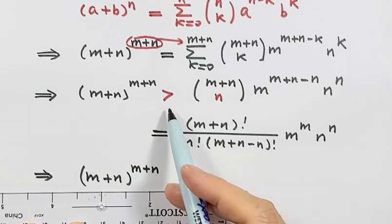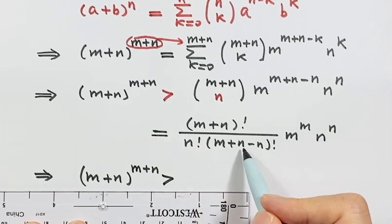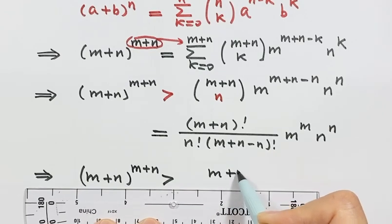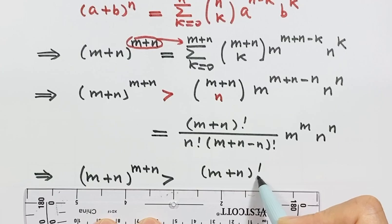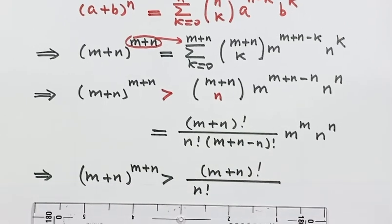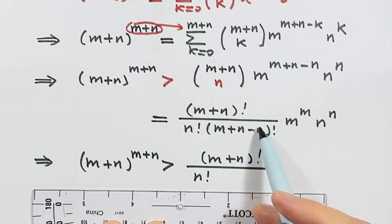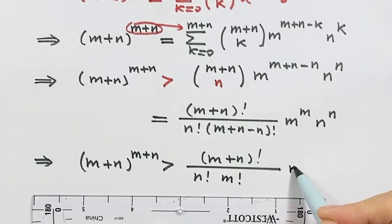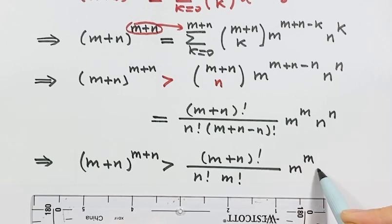So let's simplify this part. We have (m plus n) factorial, then n factorial. These cancel, then we have m factorial, times m to the power m, times n to the power n.